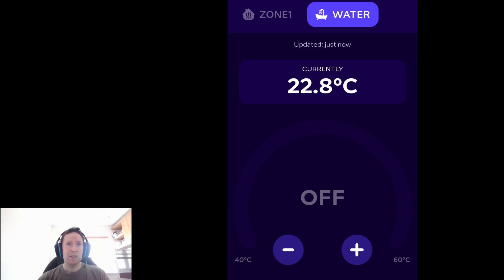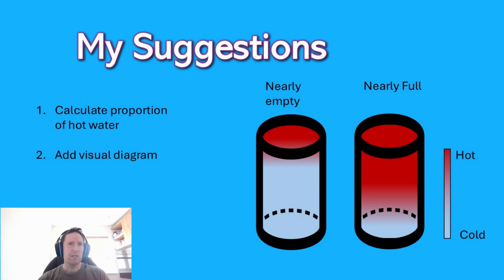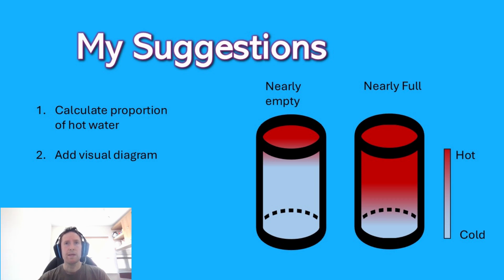So I wonder if instead it makes sense to display the quantity or proportion of hot water remaining, if there's a way it can calculate that. What are your thoughts, and what do other heat pump brands display for this? Maybe the solution is to simply move up the thermostats, but I assume it's down there near the bottom to ensure that the whole cylinder is heated and that it's not only heating the top proportion.